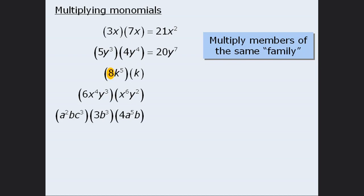In the next example we have a coefficient of 8 in one term, but the other term does not have a coefficient. In these instances the coefficient is assumed to be 1, in which case 8 times 1 is equal to 8. Next we will multiply k to the power of 5 by k to get k to the power of 6.